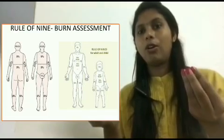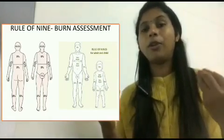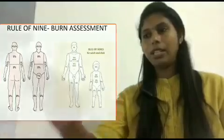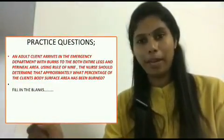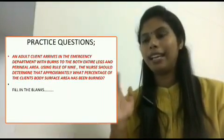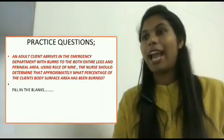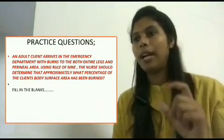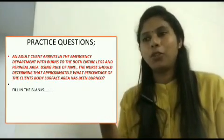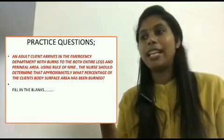Now we will look at a question based on the percentages we studied. The first question: an adult client arrives in the emergency department with burns to both entire legs and the perineal area. Using the Rule of Nine, the nurse should determine approximately what percentage of the client's body surface area has been burned.